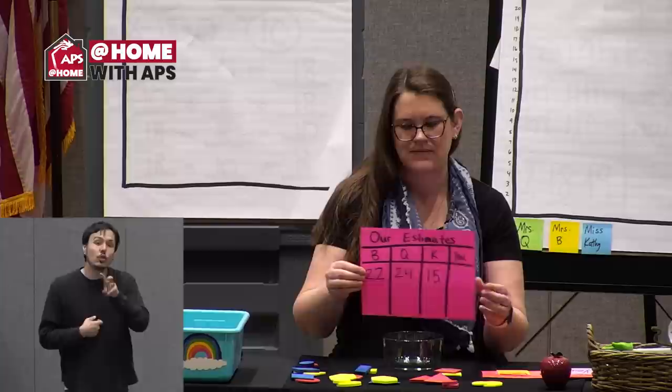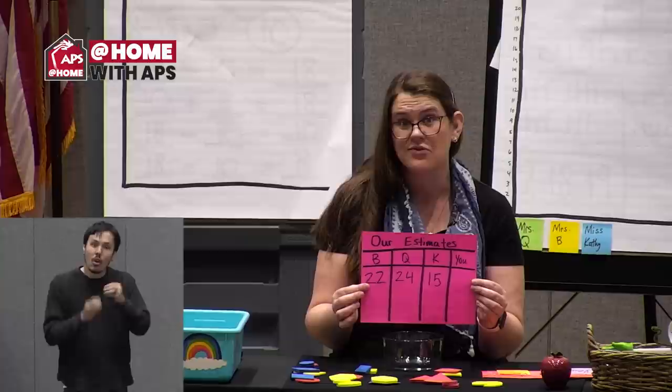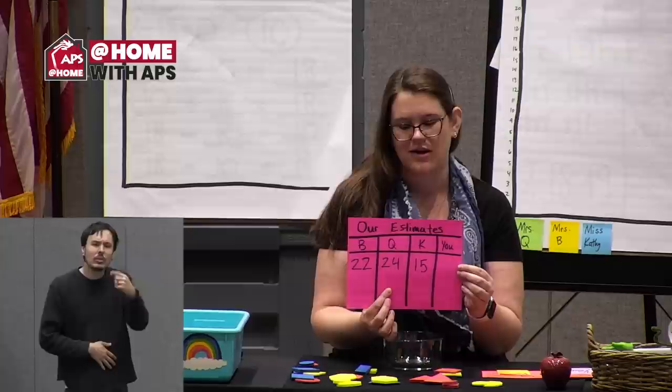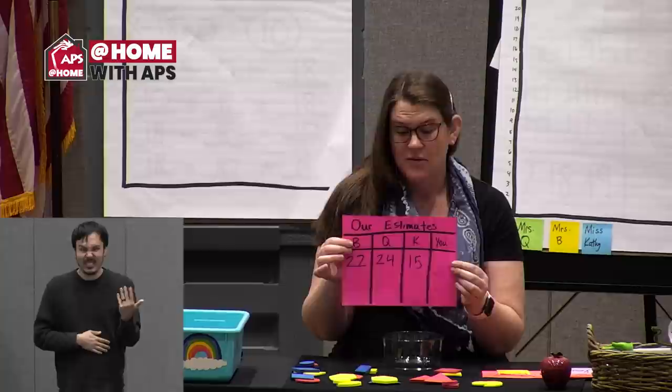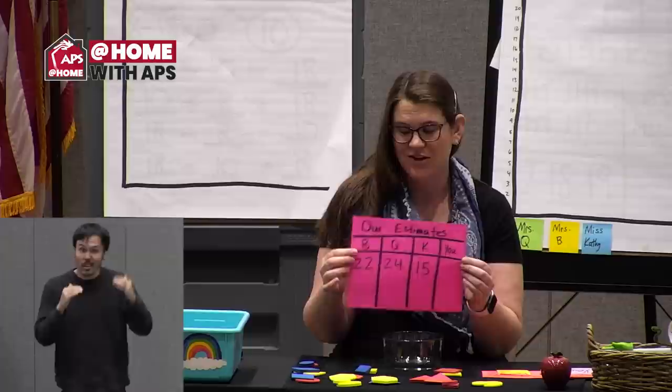That's right, it's even. When every single number has its pair, as Mrs. B was telling us, that means it's an even number. The real answer is 22. Let's look at our estimates again: Mrs. B said 22 — she got it exactly correct, her guess was equal to the real number. Mrs. Q said 24, which was a little bit higher. Mine was 15, much lower than the real number. What about you? Was your number close — higher, lower, or exactly correct like Mrs. B?